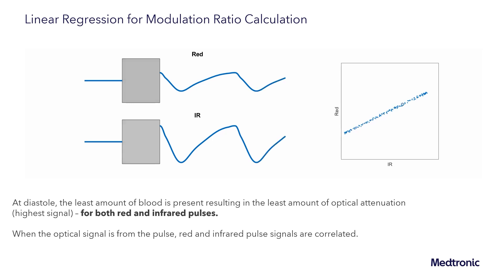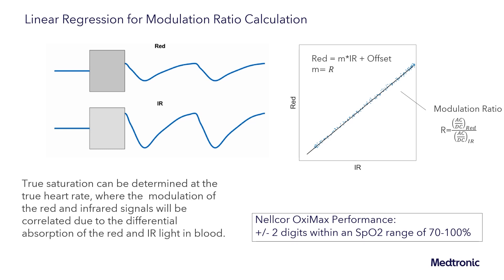If we think about why those signals would be correlated — why would the two signals change at different rates? They would change at different rates because they're being absorbed differently. As that blood volume changes during that pulse, the red and the infrared lights will change based on that relative absorption. And what we find is that if we perform a linear regression, the slope of that linear regression is going to provide us that modulation ratio. That modulation ratio can then be used to calculate SpO2. Moving through these steps is how Nelcor is able to achieve that plus or minus two digits of performance from a range of 70 to 100 percent saturation. Here, Nelcor finds the true saturation at the true heart rate of that patient.